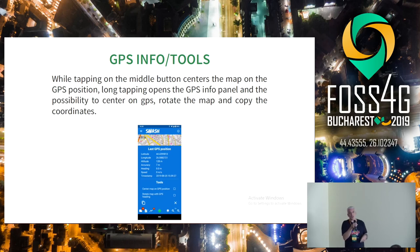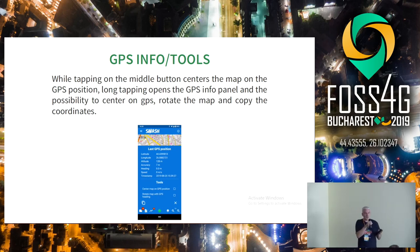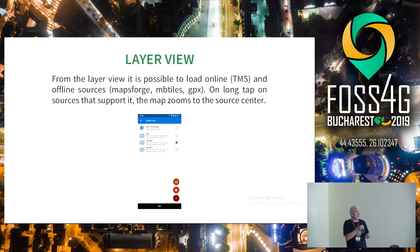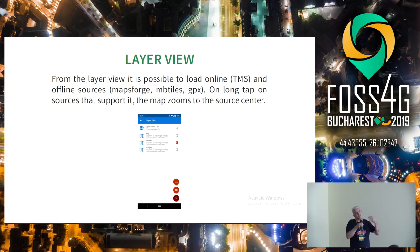The central GPS button shows a snack bar with the last GPS position available. You can copy that position, and from here you can also enable map centering on the GPS position and map rotation. The layer view currently supports online TMS maps, MapsForge MBTiles, and GPX. In GeoPaparazzi, GPX files are imported in the project database, but here they are loaded natively as a layer, so you can overlay them on each other.